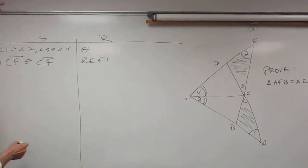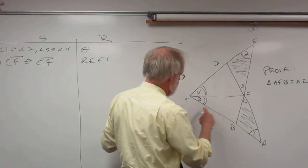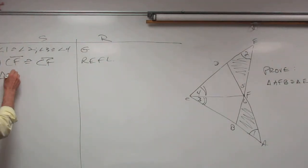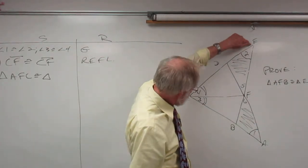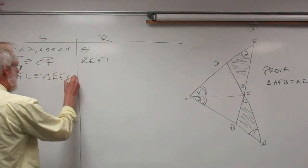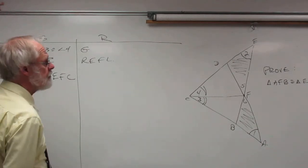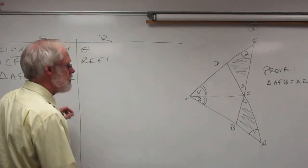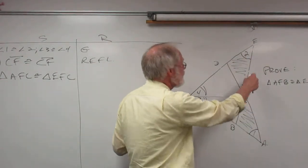Now we have enough information to state that the big triangles are congruent. Step three: triangle AFC is congruent to triangle EFC. Those statements have to match up — angle A with E, angle F with F, C with C, and sides AF with EF. We've proven the big triangles congruent.